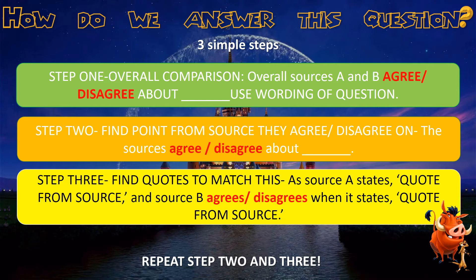Step 2: find a point about what the sources agree or disagree on. You say 'The sources agree or disagree about...' and state what they agree or disagree on. Step 3: find quotes to match. After stating the point, you say 'As source A states...' with a quote, then 'and source B agrees or disagrees when it states...' with another quote. You then repeat steps 2 and 3, so your final answer has an overall comparison plus two detailed comparisons.